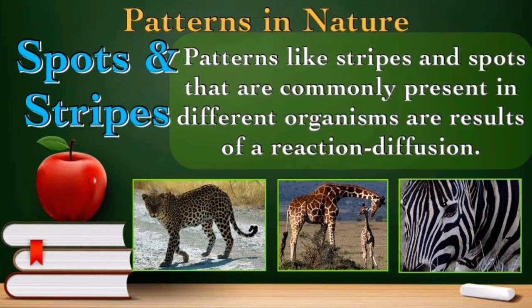Next kind are the spots and stripes. Patterns like stripes and spots are commonly present in different organisms, especially in animals. These spots and stripes are the result of a reaction diffusion. So you can see there the animals have their own spots and stripes.